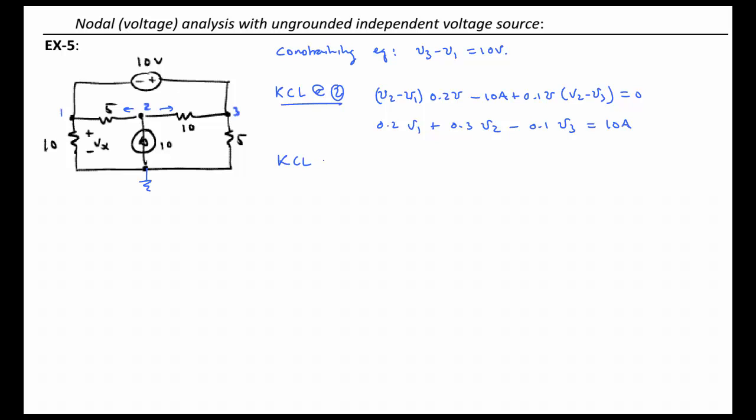Now, let's look at KCL at node 1. We'll start with the current going down through the 10 ohms, so I have 0.1 times V1. Current going to the right through the 5 ohms will be 0.2 V1 minus V2. And then the current flowing up through the source, we'll call that I10.